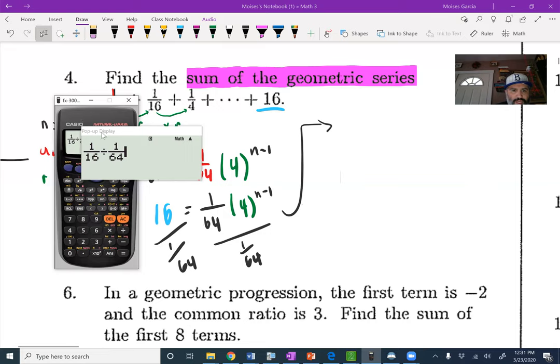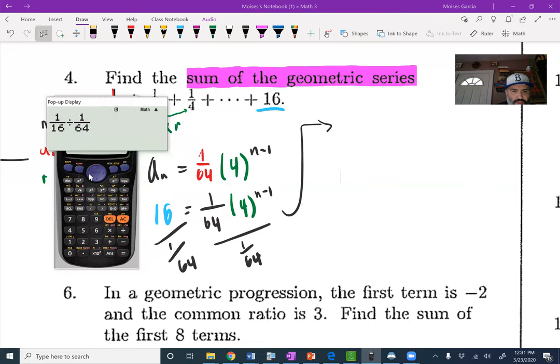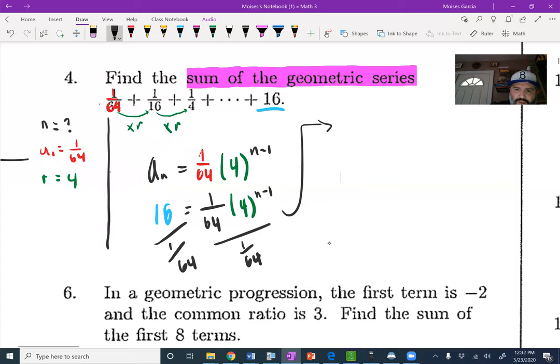We're just taking 16 and dividing it by 1 over 64. That should give us 1024. So 1024 equals 4 to the power of n minus 1.